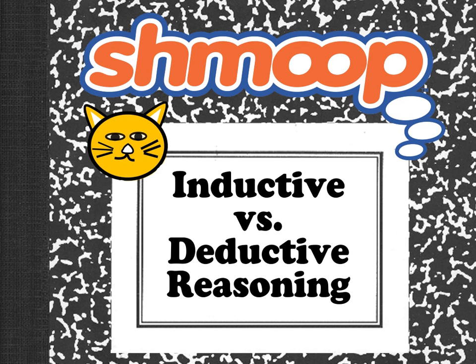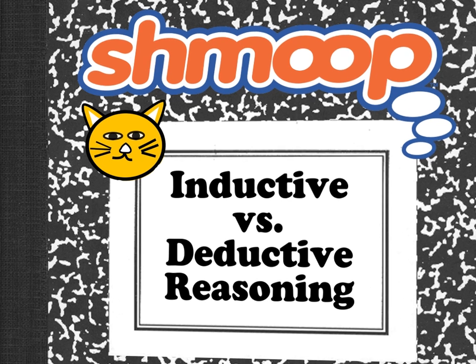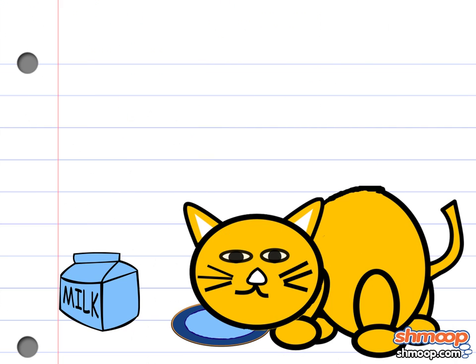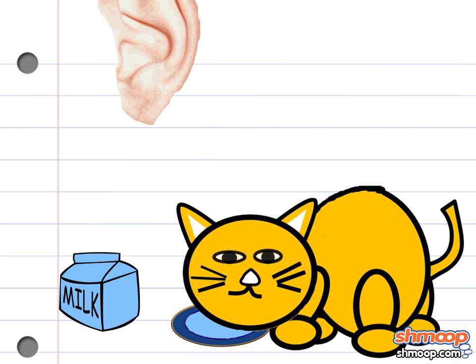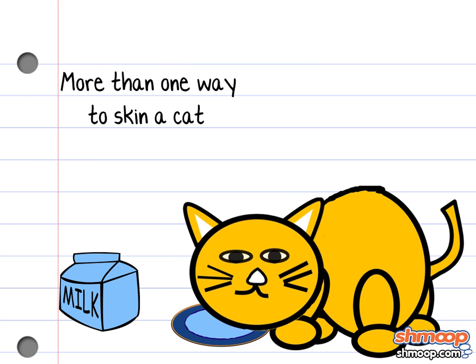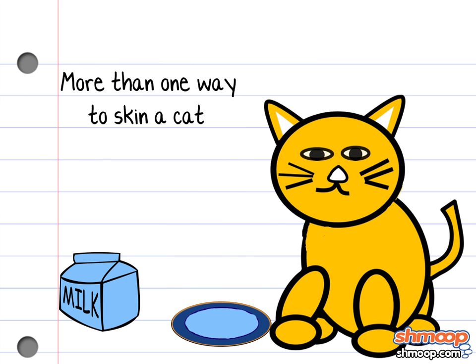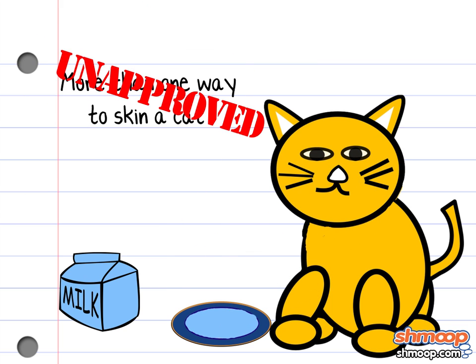Inductive vs. Deductive Reasoning, a la Shmoop. As you may have heard, there is more than one way to skin a cat — although none of them are endorsed by PETA.